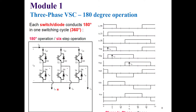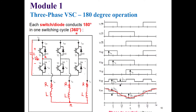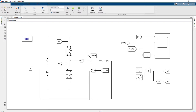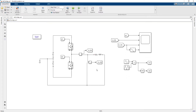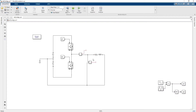For our three-phase converter, we will do the 180 degrees modulation technique, in which each switch conducts 180 degrees in one switching cycle. We will go and simulate this converter in MATLAB. We built up this converter before, so now I'm going to make the three-phase converter. I'll delete the previous components and build up my converter from scratch again.